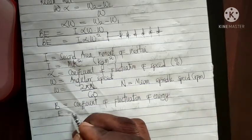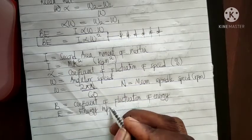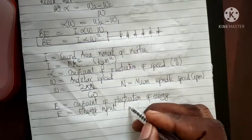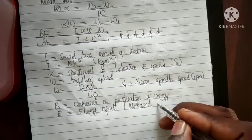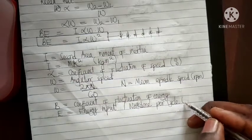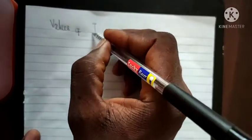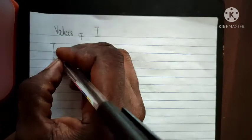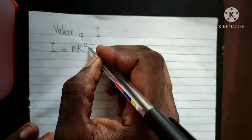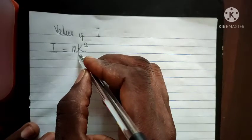The energy input E to the flywheel, also known as the work done per cycle, is always in Newton-meters. The second moment of inertia I of the flywheel depends on the type of flywheel. The first formula is I = mk², where m is mass and k is the radius of gyration.